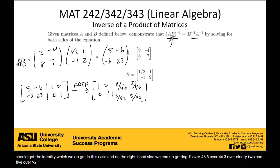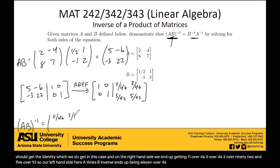So our left-hand side here, A times B inverse, ends up being 11 over 46, 3 over 46, 3 over 92, and 5 over 92.